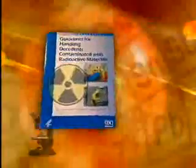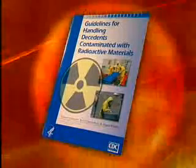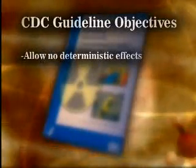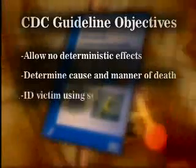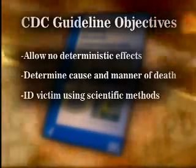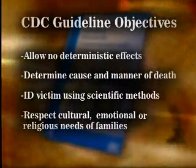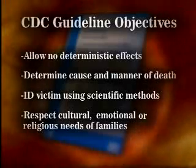In CDC's guidelines, it was necessary to balance the principles of radiation safety with the needs of medical examiners, coroners, funeral directors, and the public. The objectives of CDC's guidelines are as follows, listed in priority order. Under no circumstances should anyone receive enough radiation to cause a deterministic effect. Medical examiners, coroners, and their staff may receive some amount of radiation in order to conduct an investigation to determine the cause and manner of death and allow for victim identification using scientific methods. Funeral directors may receive some amount of radiation in order to respect the cultural, emotional, or religious needs of bereaved family members. Family members or the clergy may receive some radiation exposure for the same reasons.